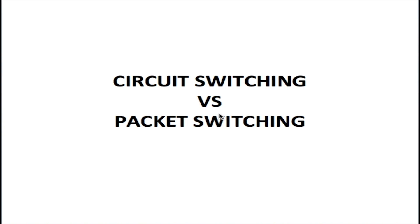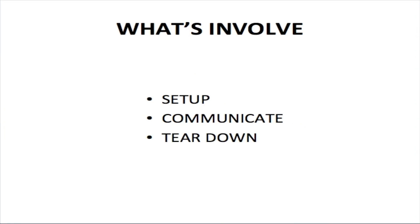Circuit switching is generally used for voice communication and packet switching is generally used for data communication. In order for circuit switching to work, first a transmission path has to be established for communication, and at the end of the communication the path has to be torn down.